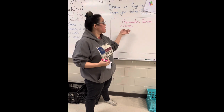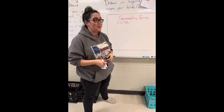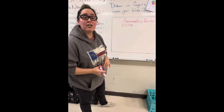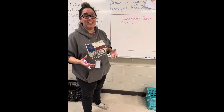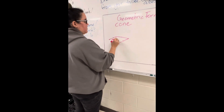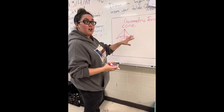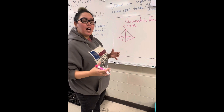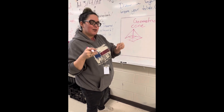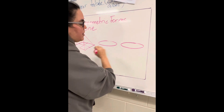Hey everybody, it's Miss C — we're back with more geometric forms. Our next shape is a cone, because a cone and a pyramid aren't that different, except for the shape of the bottom. For a pyramid, we had a square that was squished. The only difference for a cone is that instead of a square, the bottom of a cone is a circle. Whenever you squish a circle — remember, a diamond is just a squished square — you get a stretched-out oval. So we're going to draw two ovals as the bottoms of our cones.